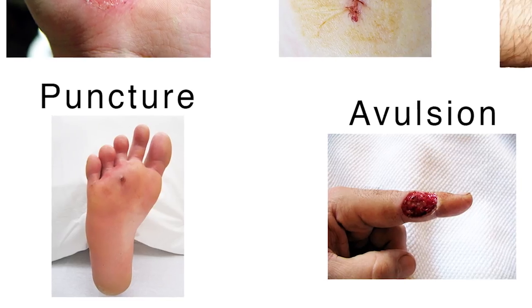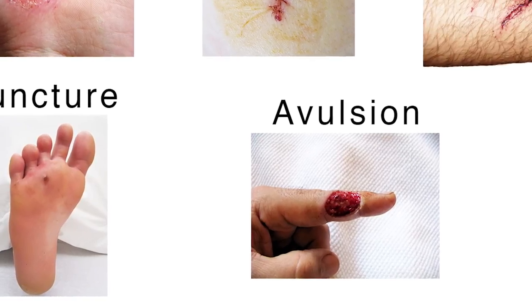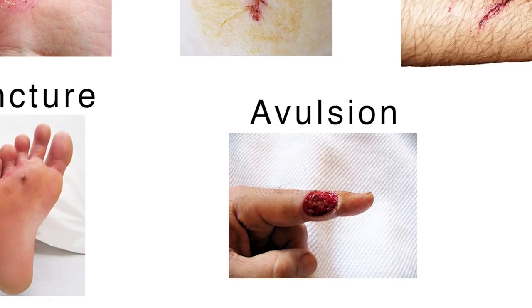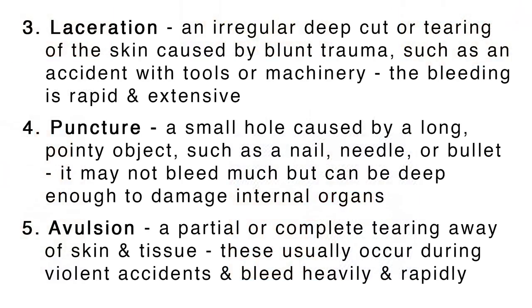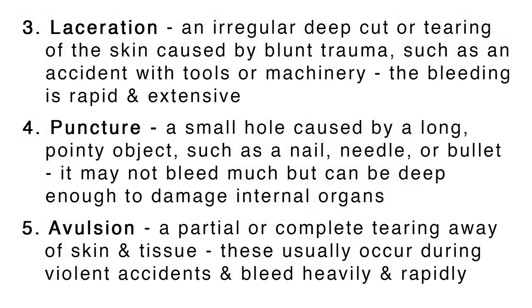Fifth, an avulsion is a partial or complete tearing away of skin tissue. These usually occur during violent accidents and bleed heavily and rapidly.